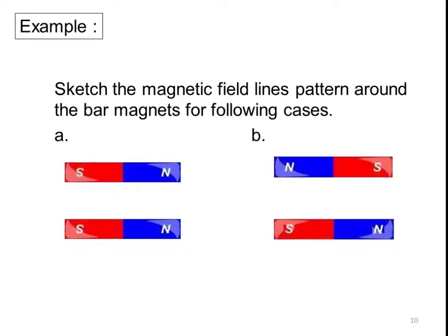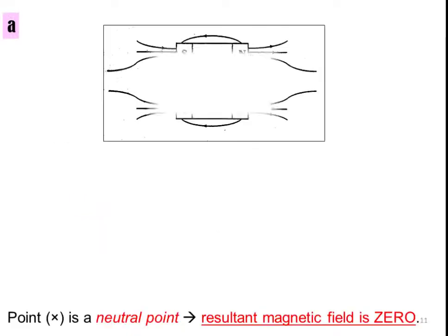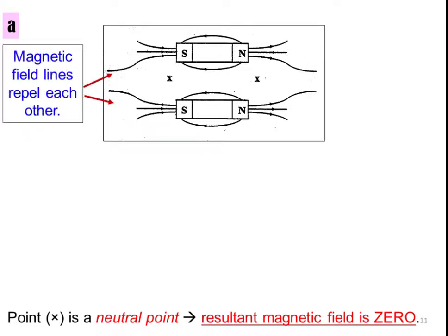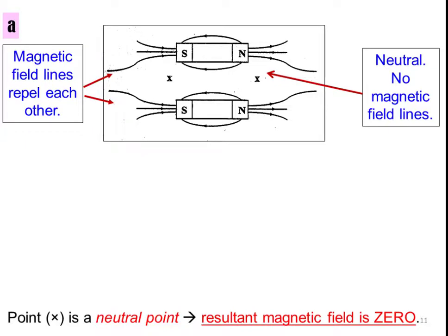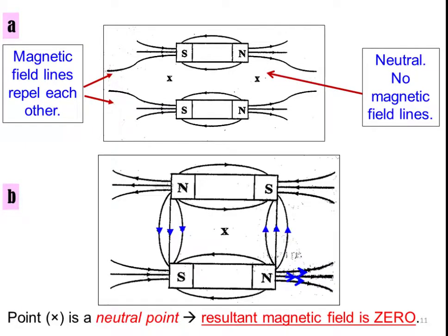Sketch the magnetic field line pattern around the bar magnets for the following cases: figure A for like poles, and B for opposite poles. You can pause the video to sketch the magnetic field lines. The correct pattern for like poles shows the field lines repelling, and this is the magnetic field line pattern for opposite poles or unlike poles. At point X here is a neutral point where the resultant magnetic field is zero.